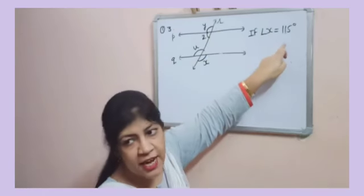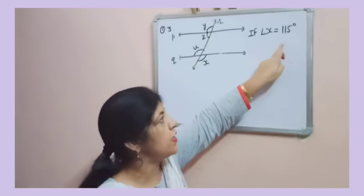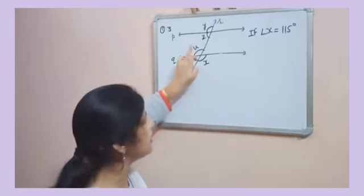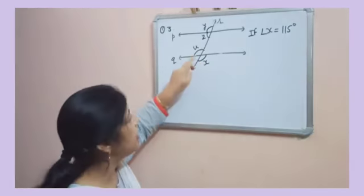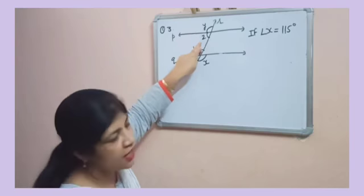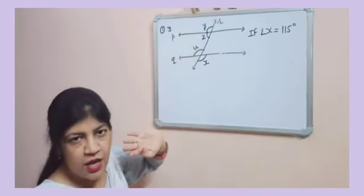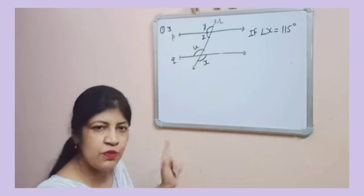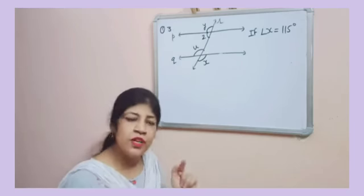Angle X is given to you, 115 degrees, and you have to find the remaining angles, the unknown variables that is U, Y, and Z. Now you will use different types of angles, different types of relations.